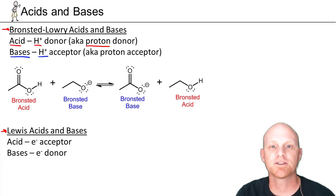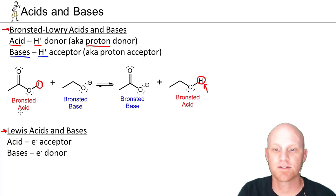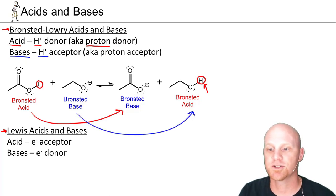Bronsted-Lowry envisioned an acid-base reaction as simply the transfer of a proton from the acid to the base. We can see that this is the proton, the hydrogen of interest. It's going to get transferred from the acid to the base. That's why on the other side, it now ends up on what used to be the base. Our Bronsted-Lowry acid turns into its corresponding conjugate base. And our Bronsted-Lowry base turns into its corresponding conjugate acid. Just simply the transfer of a proton.